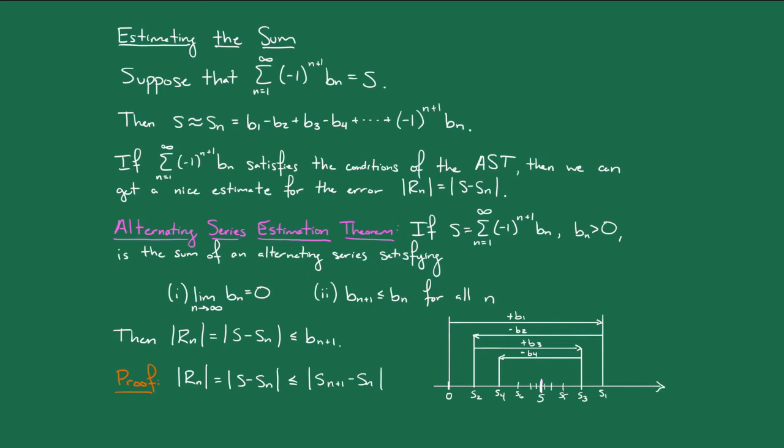However, let's think about what happens when you subtract sn from sn plus 1. sn plus 1 is the sum of the first n plus 1 terms, and sn is the sum of the first n terms. So, if we subtract sn from sn plus 1, we're really just left with the n plus first term, which is exactly bn plus 1, after taking an absolute value. And this proves the theorem.